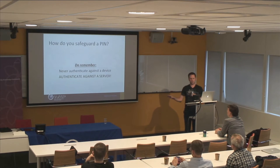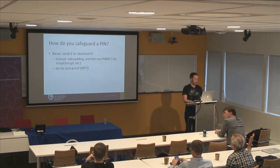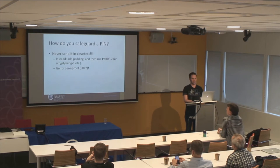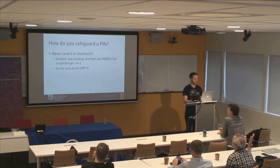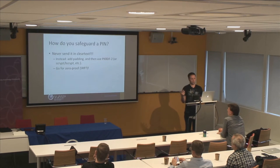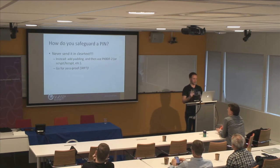We did all that memory stuff, but how are we going to authenticate against the server now? Obviously you should never send it in clear text — that seems obvious, but people are still doing that. Instead, add padding — dynamically generated padding, stored and encrypted somewhere else on the device — and you could use PBKDF2, scrypt, or bcrypt. Or you could go zero-knowledge with Secure Remote Password. Just make sure if you use that, that you have a long enough verifier, because if you don't — well, Sony can tell you how that works out.